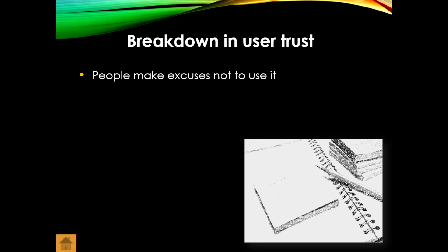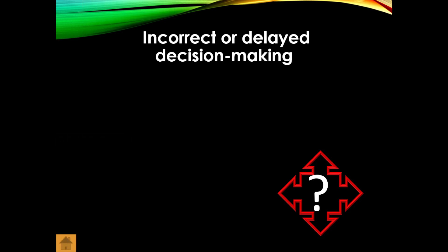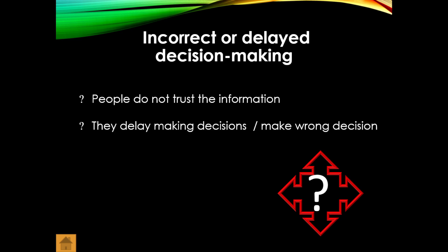An input mask can ensure the data is exactly what you want — for example, three letters and two numbers and another three letters. When software doesn't work properly and bad decisions are made, people make excuses not to use it. They run manual backup systems and this leads to increased workload because they become less efficient. People won't trust the information, will delay decision making, or make the wrong decision because they've been given wrong data.